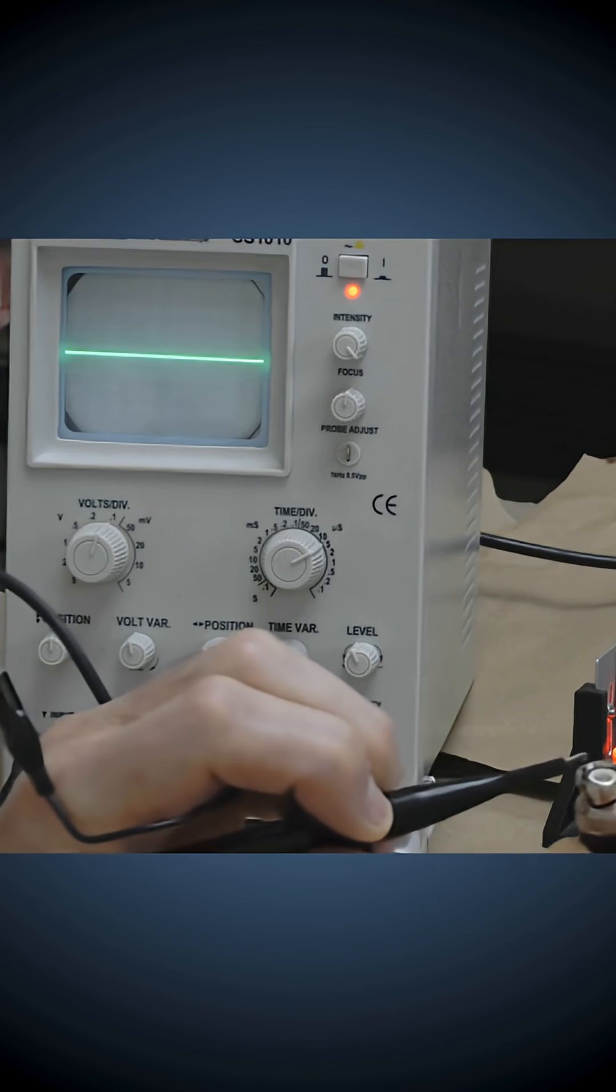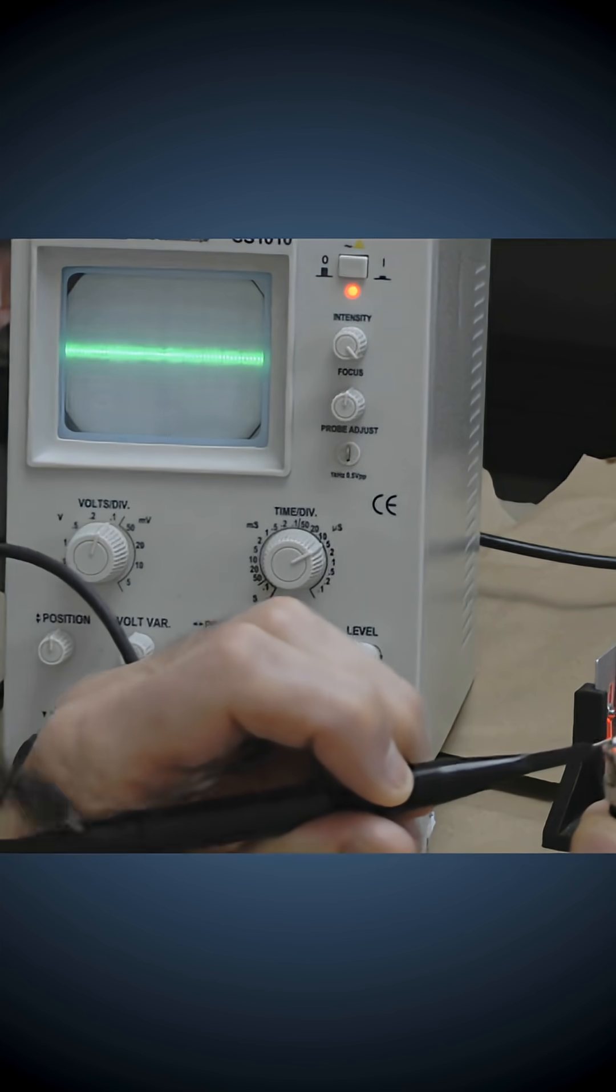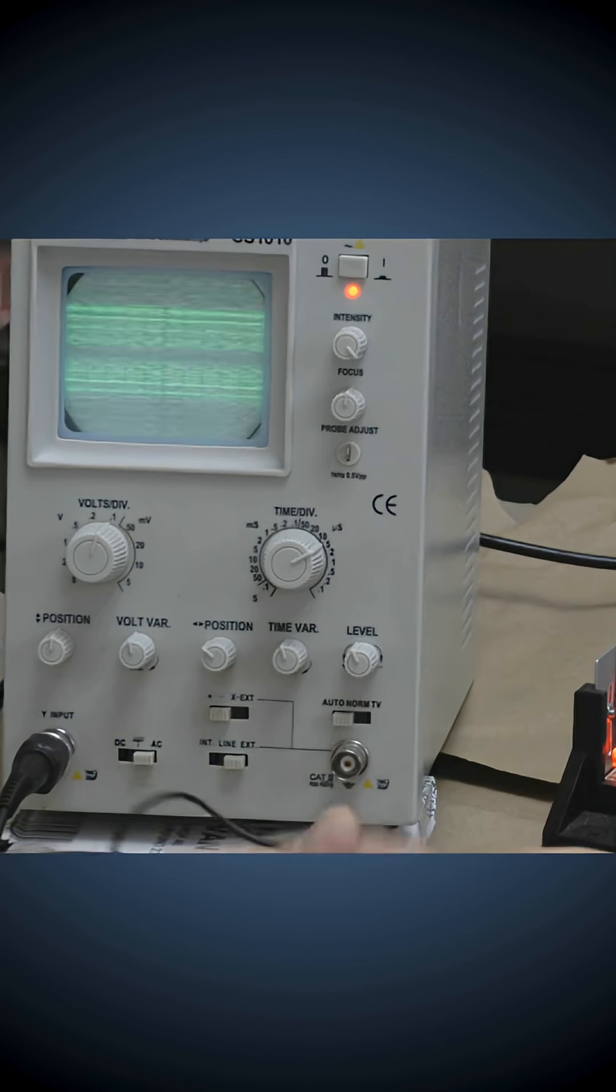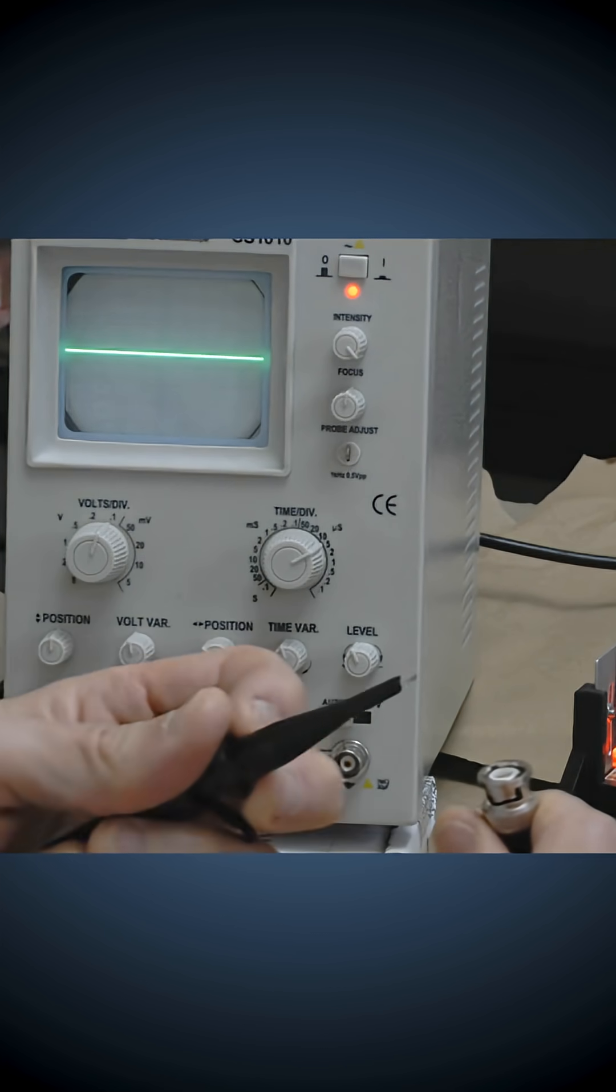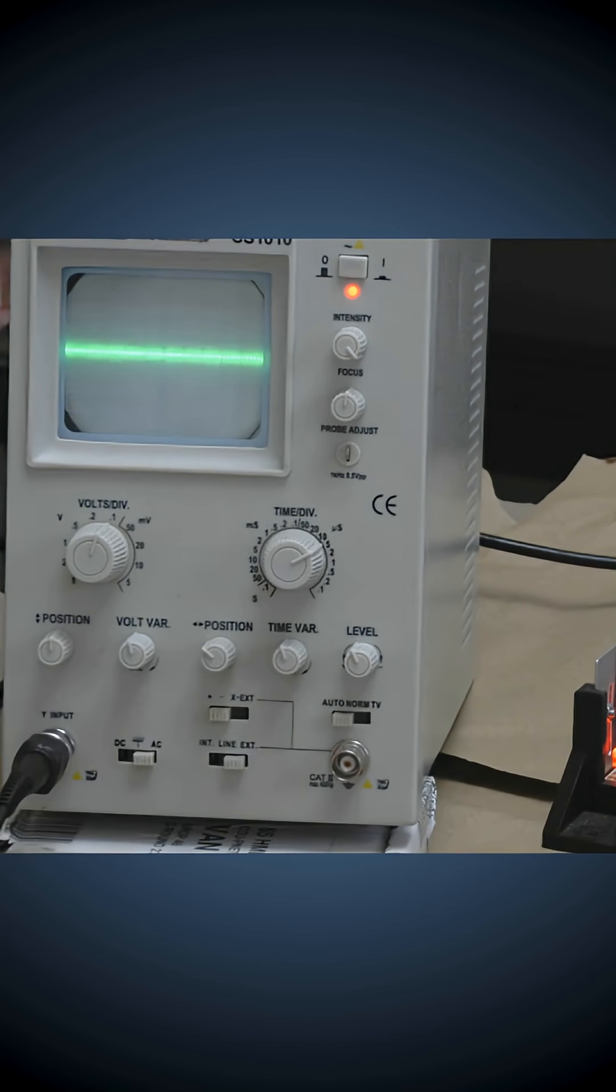So if I put it on the casing of the BNC like this, you get exactly the same signal. So I'll leave it attached to the casing like that, and I'll show you this signal in a bit more detail.